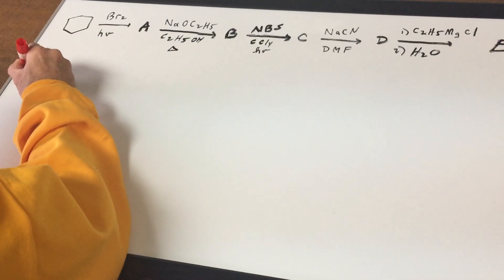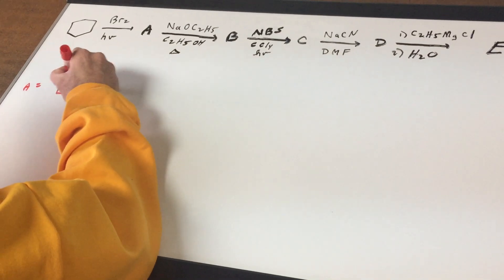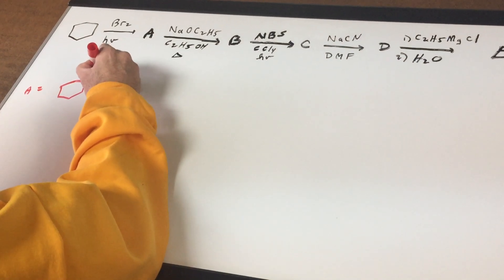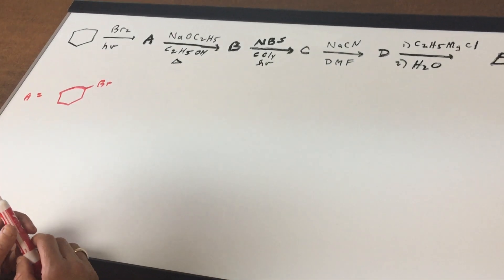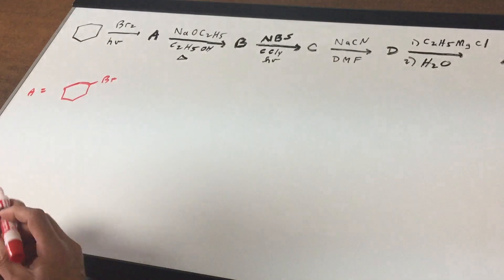First of all, step letter A is simply the halogenation, the halogenation of a cycloalkane. So as you can see, this is a free radical mechanism and we would simply put on a bromine.